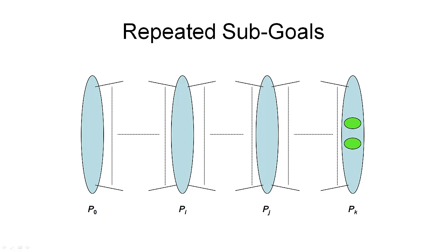Suppose we are given our planning graph with the ultimate goal in proposition layer P_K. Then we go backwards through the graph and somehow find some sub-goals in this layer P_J. Then we continue the search and this may lead to a different set of sub-goals in our proposition layer P_I.